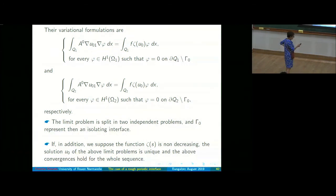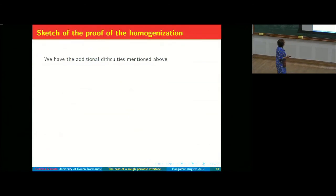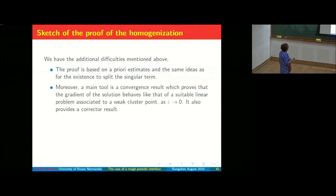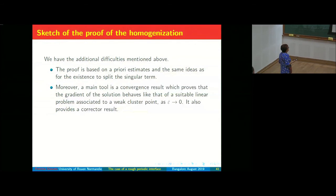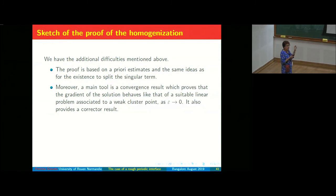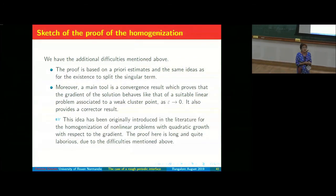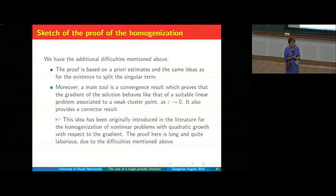Here we have this additional condition. The proof is based on a priori estimates and the same idea used in the existence for the singular term. We prove that the gradient of the solution behaves like a suitable linear problem associated to u^0, and then the difference goes to zero.